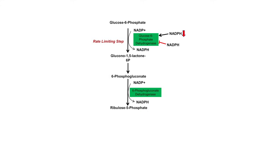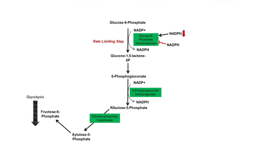Once you have ribulose-5-phosphate, it can do a couple of different things. One, it can be converted to xylulose-5-phosphate by ribulose phosphate-3-epimerase. The xylulose-5-phosphate can then be redirected back into the glycolysis pathway by being converted into fructose-6-phosphate by transketolase. So once the cell generates its NADPH, it can redirect the end product back into glycolysis to generate ATP — it's incredibly clever how the cell can do this.